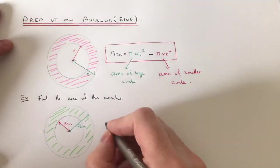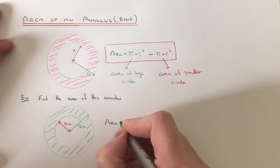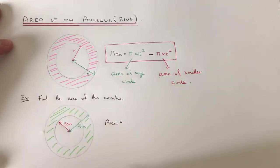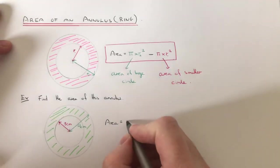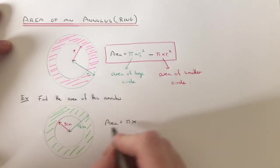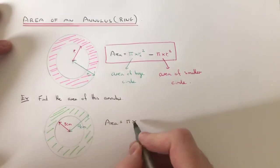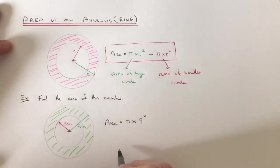So as we said then, first of all, you work out the area of the larger circle. Remember that the area of a circle is pi times radius squared, so it'll be pi times 9 squared.